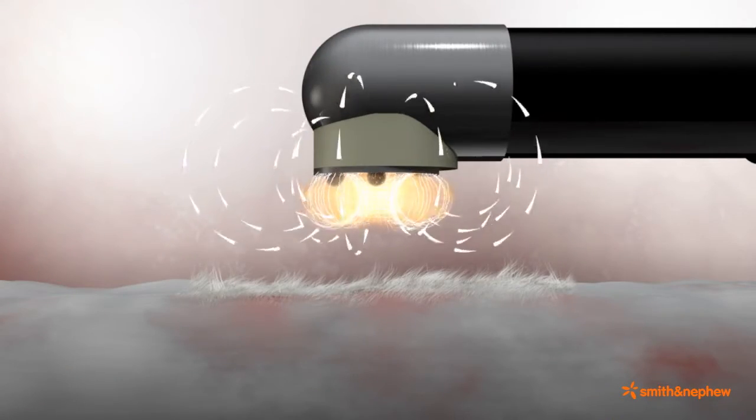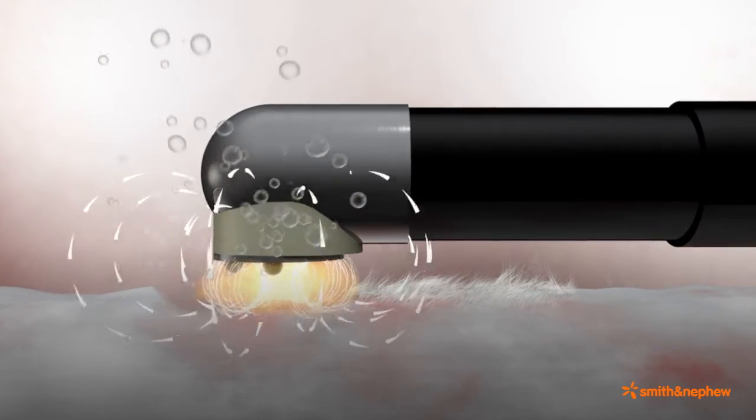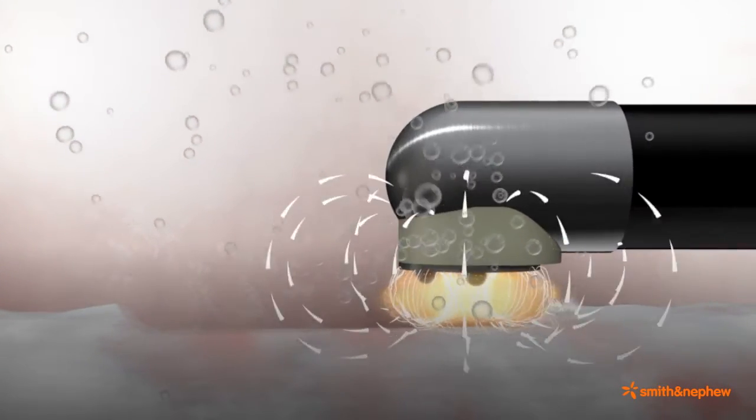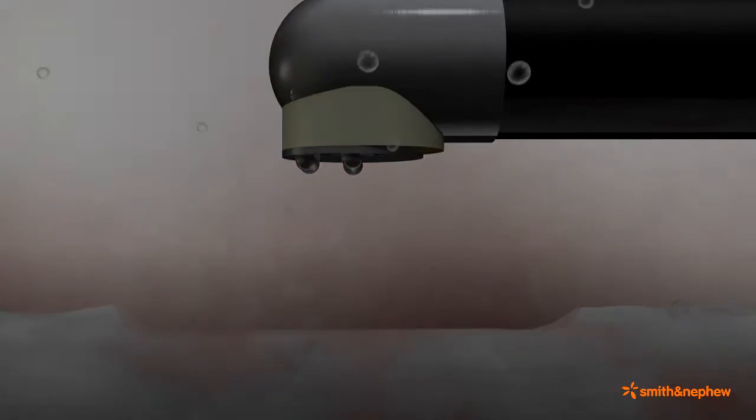The energized particles in this focused plasma layer have sufficient energy to disintegrate organic bonds within targeted tissue, removing one cell layer at a time. The result is volumetric tissue removal.